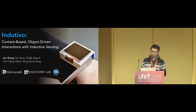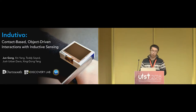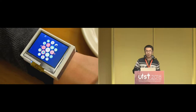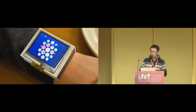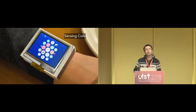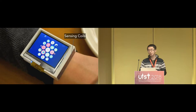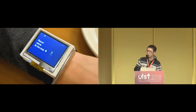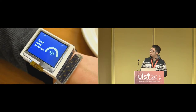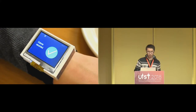Before I talk about motivation and related work, I just want to quickly show you what Intuitivo is and how it works. Intuitivo is a contact-based inductive sensing technology for contextual interactions. It uses sensing coils to recognize conductive objects and their individual movements when you place an object against the sensor. We chose smartwatch as a platform to demonstrate its unique sensing capabilities. Users can tap a utensil to trigger a fitness app and use a hinge to record calories, then remove it to confirm the number.